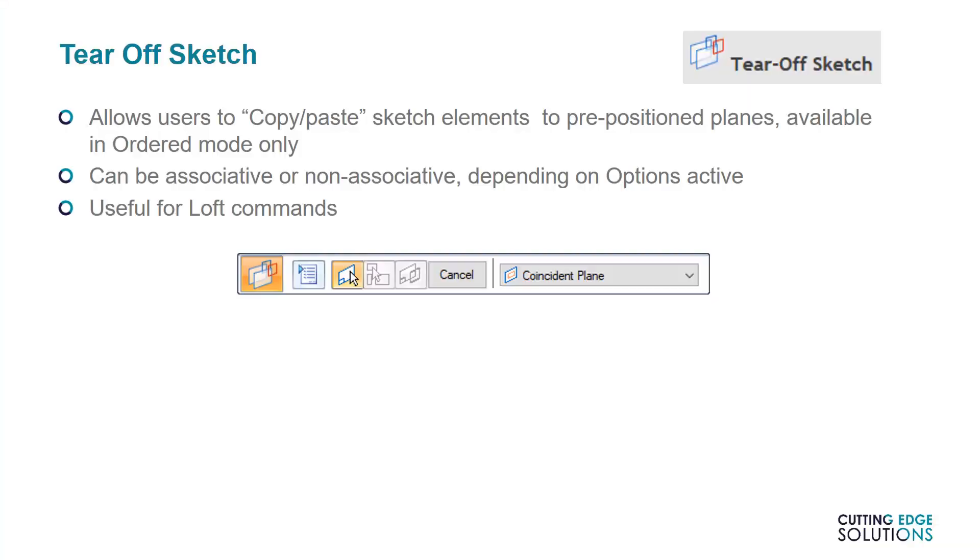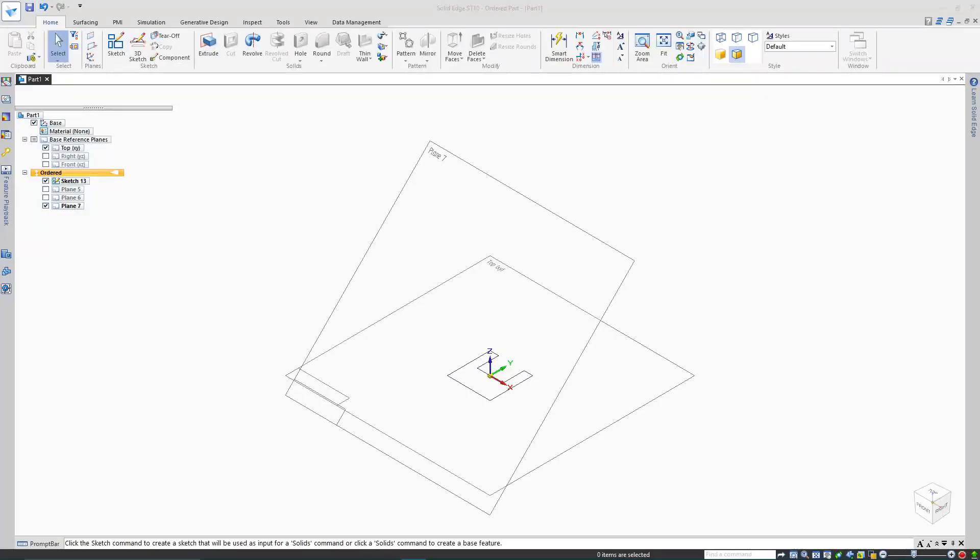The second use would be to simply copy one sketch from one plane to another in a part environment. Tear off sketch is similar to project to sketch, in that it can be used to project sketch elements between planes. But instead, it works almost like an advanced copy-paste command, and may be useful for creating lofts that have a constant cross-section along their length.